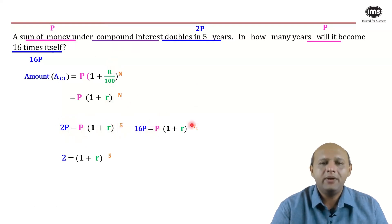We need to find out how many years it would take to become 16 times itself. So 16P would be P × (1 + r) raised to n1. Let the number of years be n1. Now if you cancel P on both sides, you get two such interesting equations.